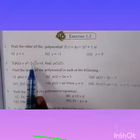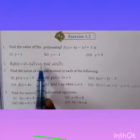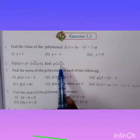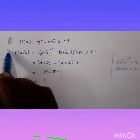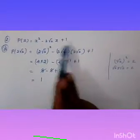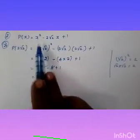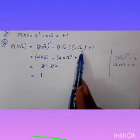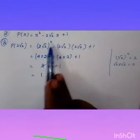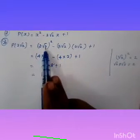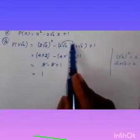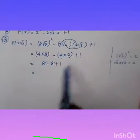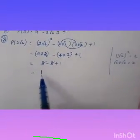Second problem: if p of x equals x squared minus 2 root 2 into x plus 1, find p of 2 root 2. Substitute x equals 2 root 2: p of 2 root 2 equals 2 root 2 whole squared minus 2 root 2 into 2 root 2 plus 1. Now 2 root 2 whole squared equals 4 into 2 equals 8, minus 2 root 2 into 2 root 2 equals minus 8, plus 1 equals 1.